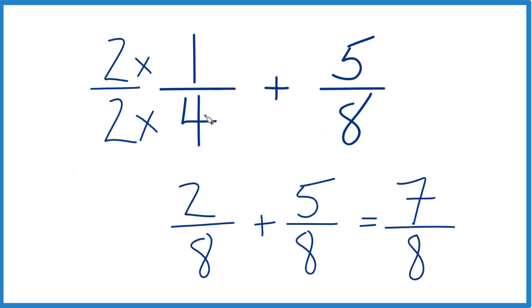So in answer to our question, 1/4 plus 5/8 equals 7/8. And that's how you do it.